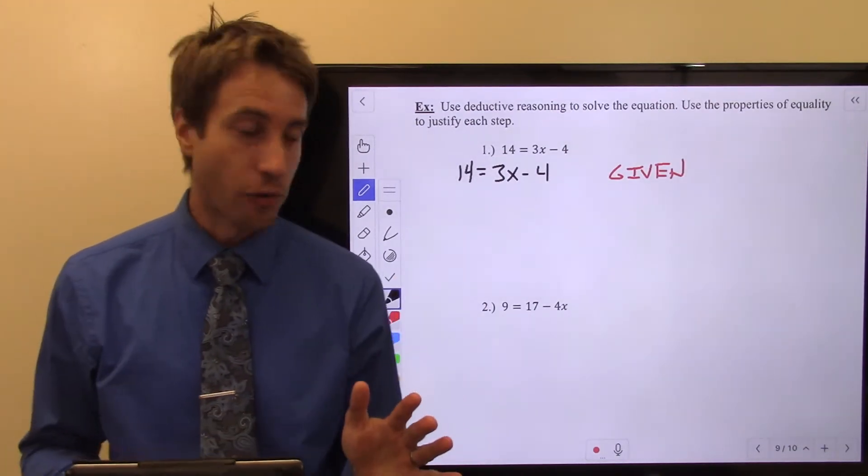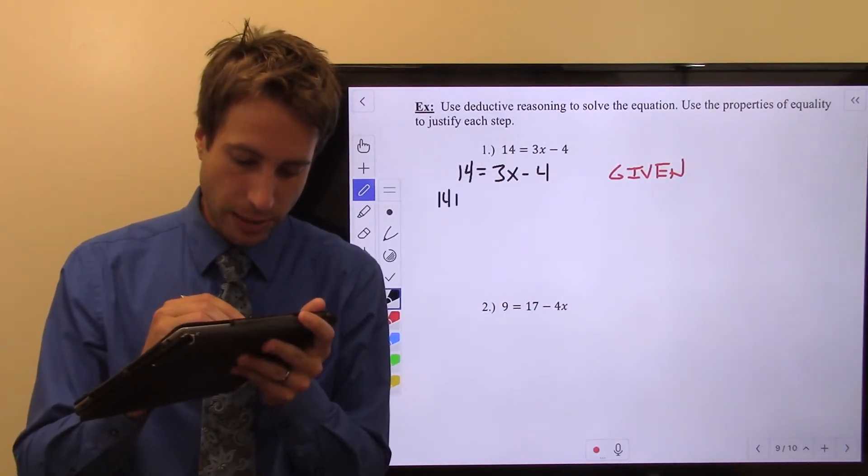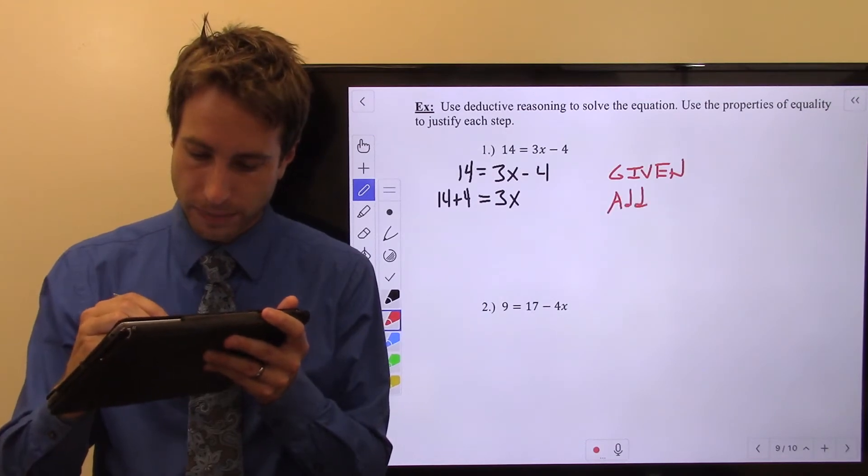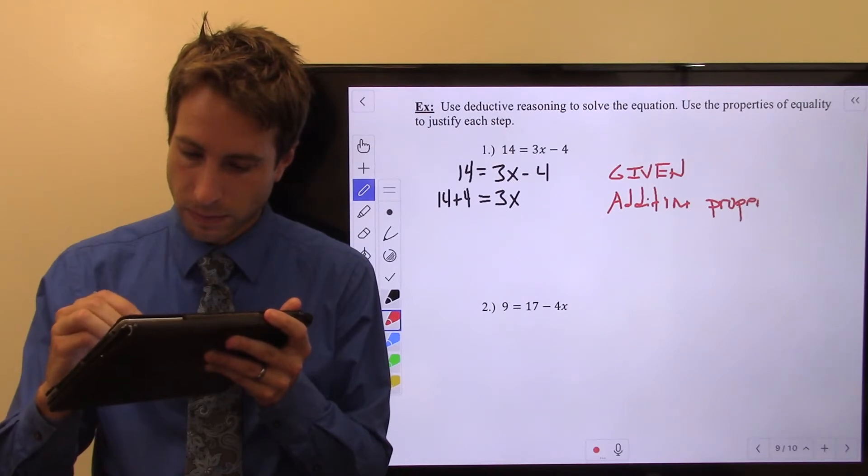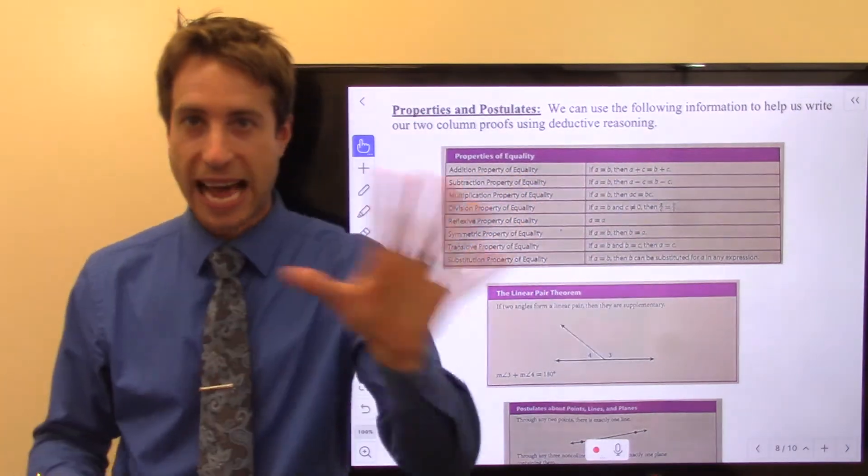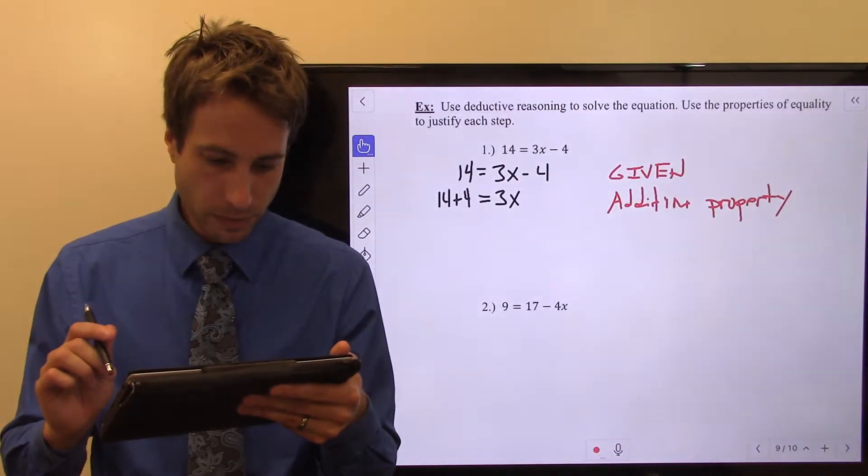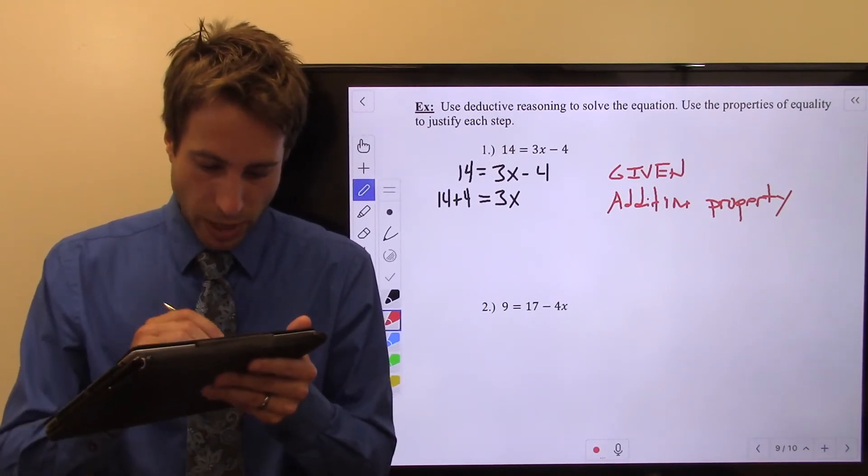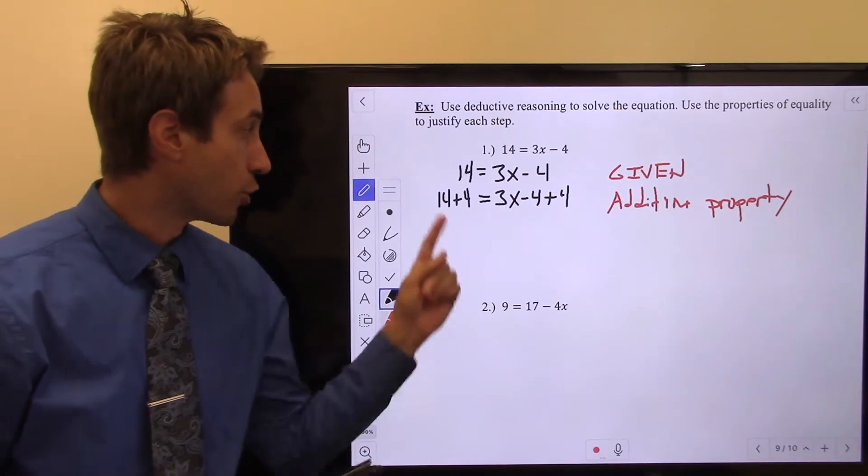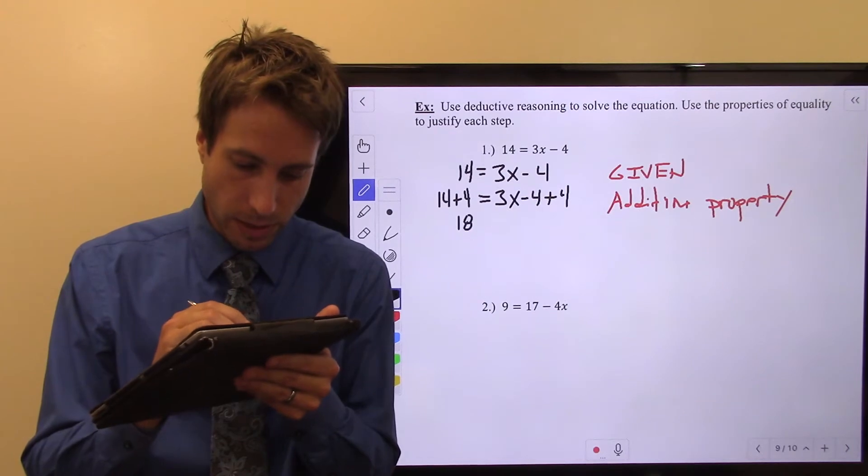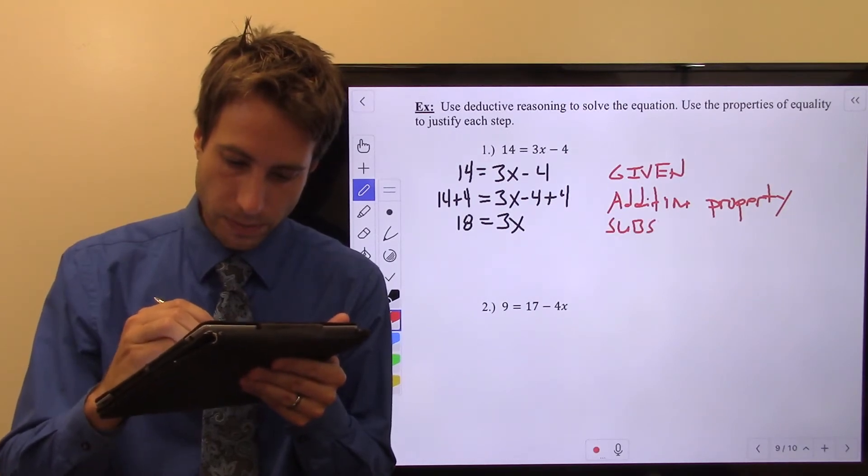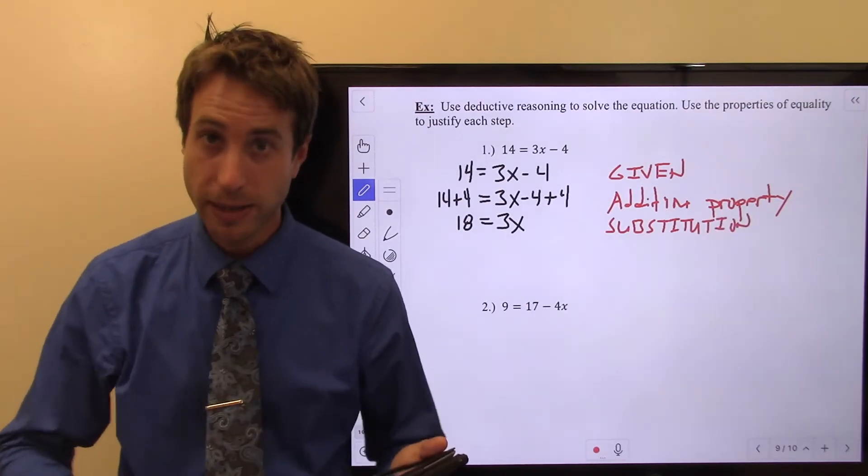I have 14 is equal to 3x minus 4. That is my given. What am I going to do? I need to solve for x. So I will add 4 to the other side. 14 plus 4 is equal to 3x. That is the addition property of equality, which you'll find on the previous page right up here. Addition property of equality. You can add the same thing to both sides and you're good. So now my next step, the addition property of equality. Well, now I need to do a substitution. What is 14 plus 4? Well, 14 plus 4 is 18 equal to 3x because minus 4 plus 4 is 0 because that is substitution.